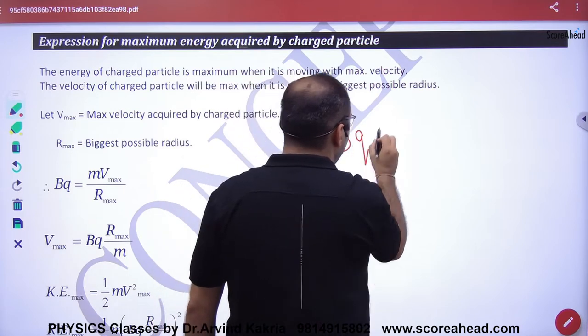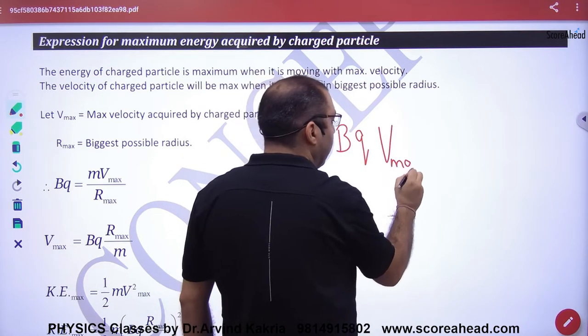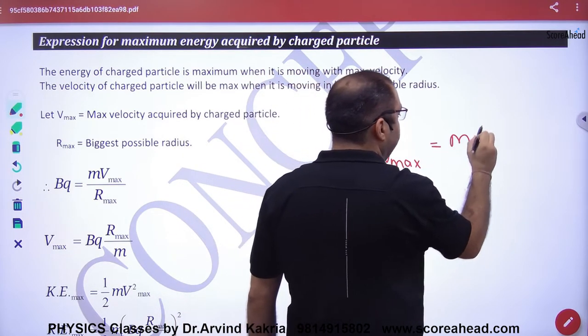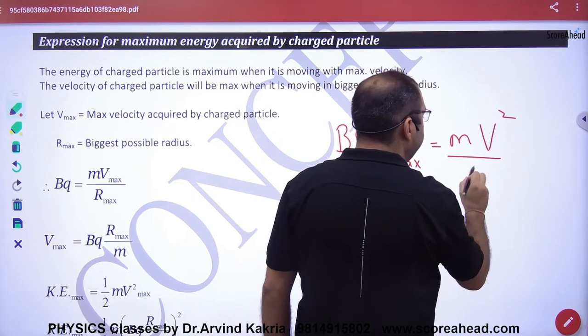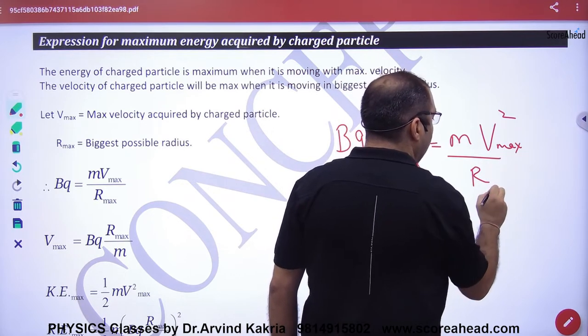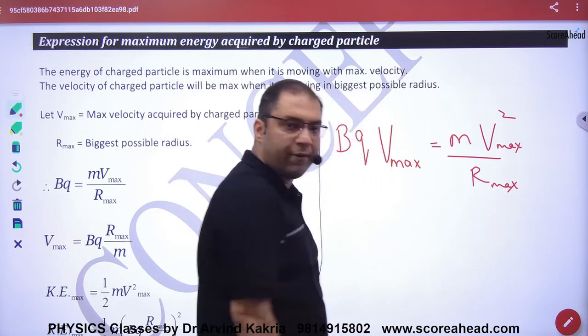So Bq in the last round maximum is mv²/r. Now r will be max and velocity will be max at this point.